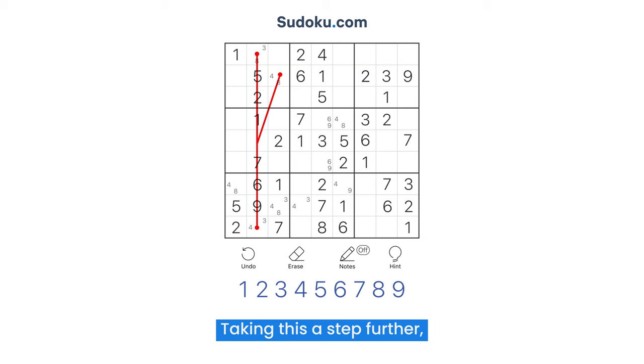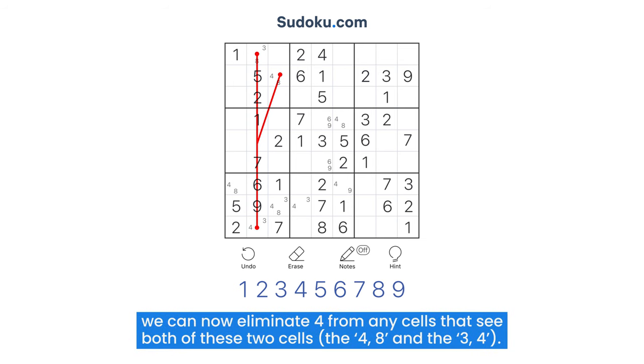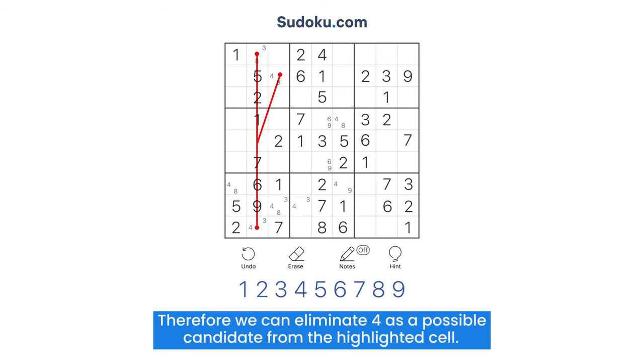Taking this a step further, we can now eliminate 4 from any cells that see both of these two cells, the 4-8 and the 3-4. Therefore, we can eliminate 4 as a possible candidate from the highlighted cell.